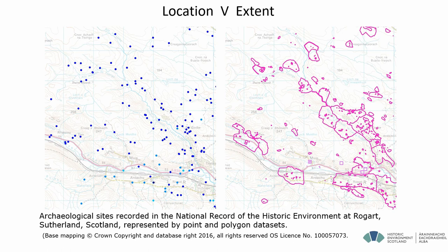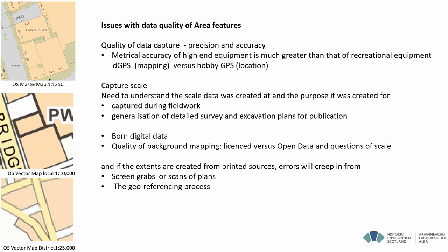Actually, when we think about points, we should be defining the extents by default. When people go out and do survey work, they should define what they're mapping. A point is useful for a distribution map, but when you're on the ground, sites cover a much larger area. Area features have their own issues around quality of data capture. If somebody's using a high-level differential GPS survey, you get much better quality mapping than with a recreational GPS. Capture scale during fieldwork is important — it's very different from a generalised plan used in a publication. We should be using born-digital data to enhance our records rather than just taking data from a report, georeferencing it, and then trying to best-fit it to a map, introducing errors throughout.